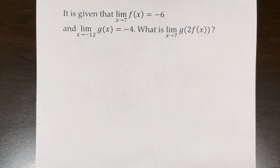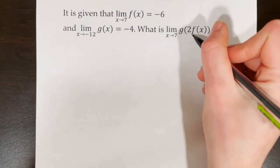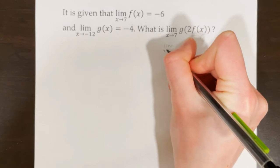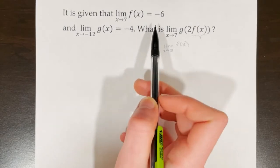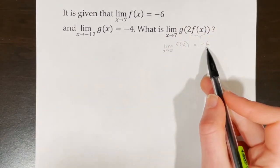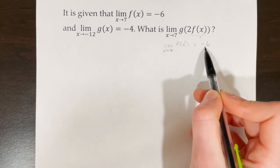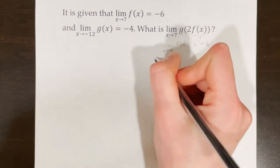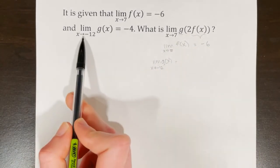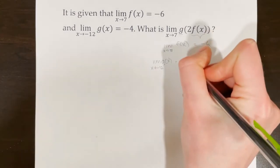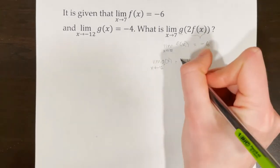Here's another composition example. We're given some facts and asked for the limit as x approaches 7 of g(2f(x)). We always find the innermost limit first: the limit as x approaches 7 of f(x), which is given as negative 6. However, inside the parentheses it's 2f(x), so I multiply negative 6 by 2 to get negative 12. Now I find the limit of g(x) as x approaches negative 12, which is given as negative 4. So the overall answer is negative 4.